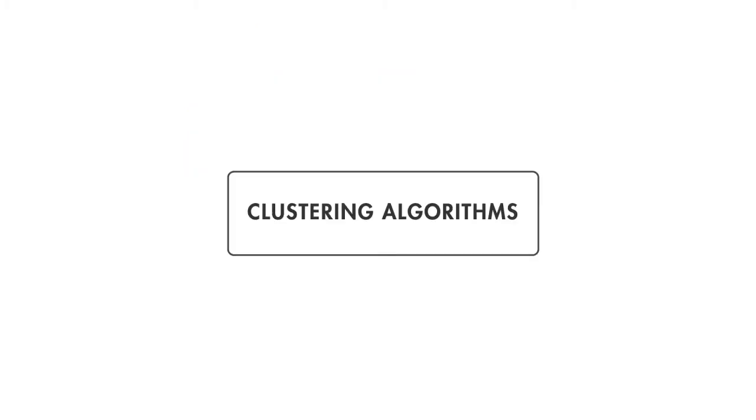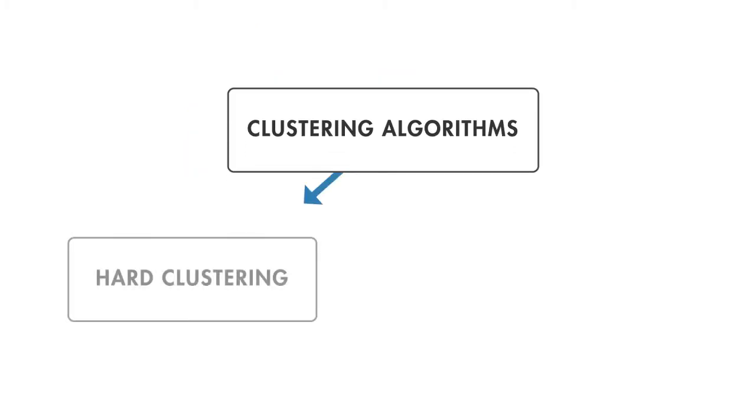Clustering algorithms fall into two broad groups. Hard clustering, where each data point belongs to only one cluster, and soft clustering, where each data point can belong to more than one cluster.